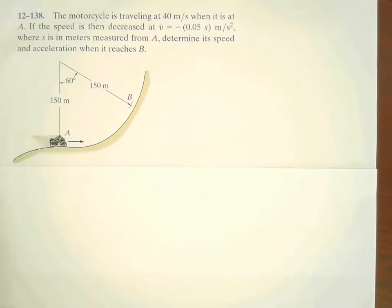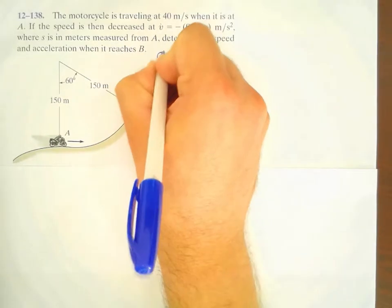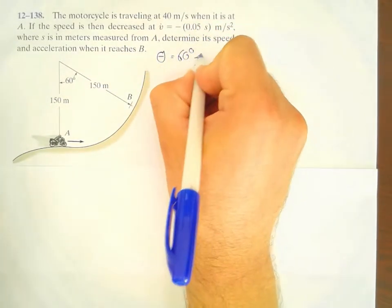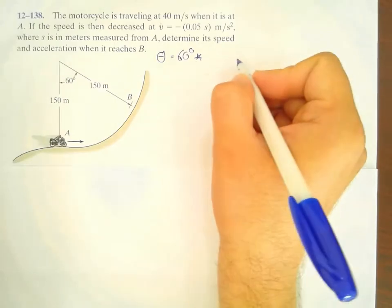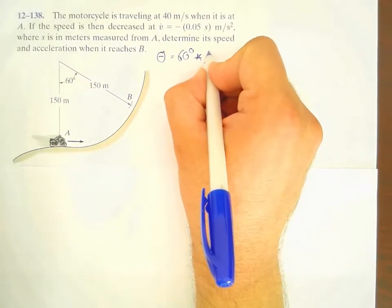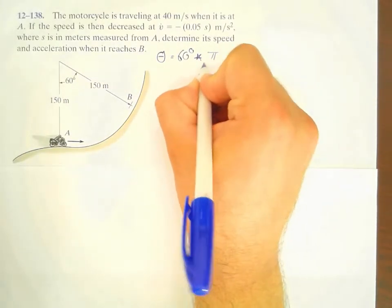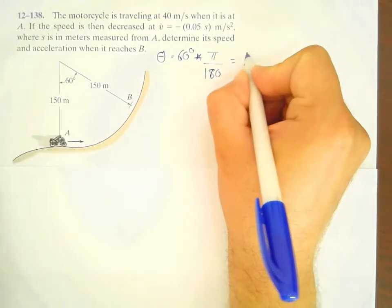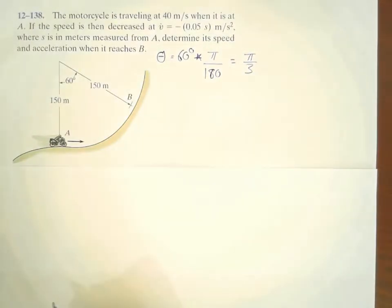First, we need to describe the angle with radians. So, we have here theta equals to 60 degrees. And to calculate the radians, we need to multiply it by π and divide it by 180. And this equals to π over 3.